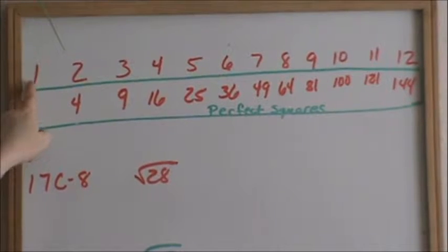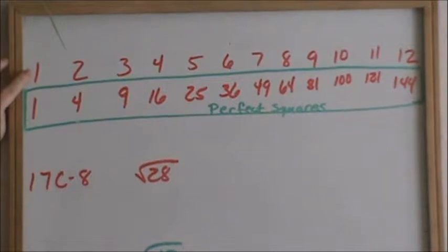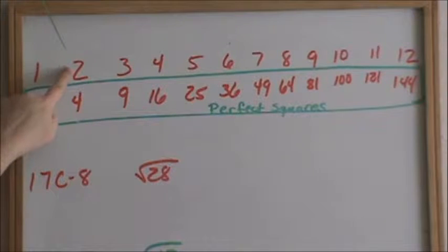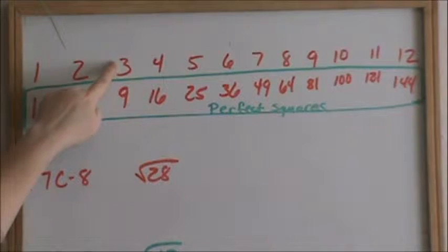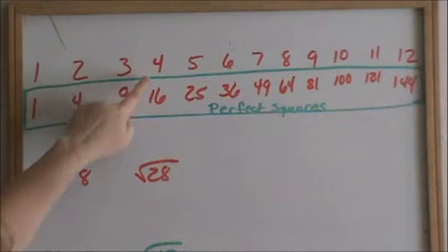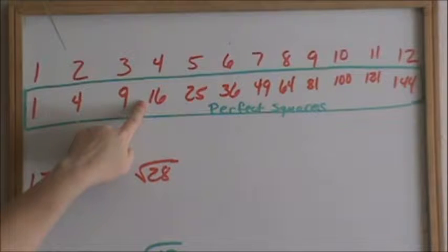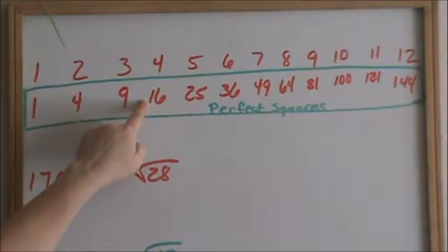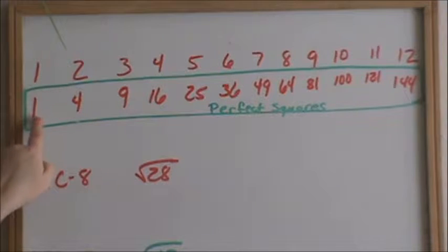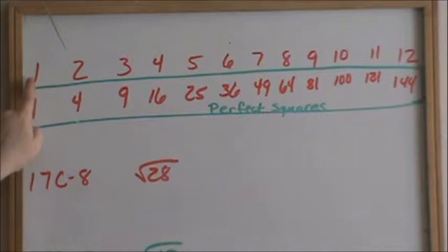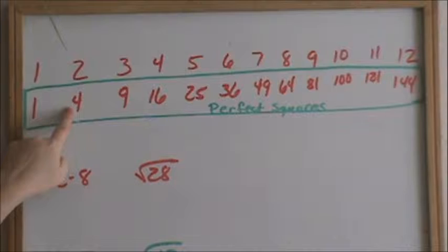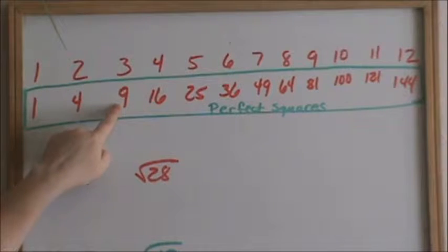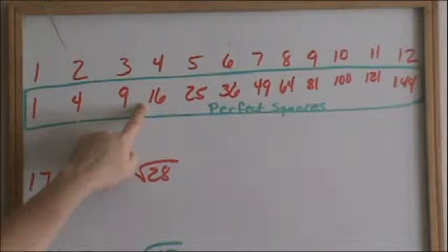Up here, I just have 1 through 12. Then what I've done is squared each number. 1 squared is 1, 2 squared is 4, 3 squared is 9, 4 squared is 16, and so on. The opposite of squaring something is square root. So square root of 1 is 1, square root of 4 is 2, square root of 9 is 3, square root of 16 is 4.